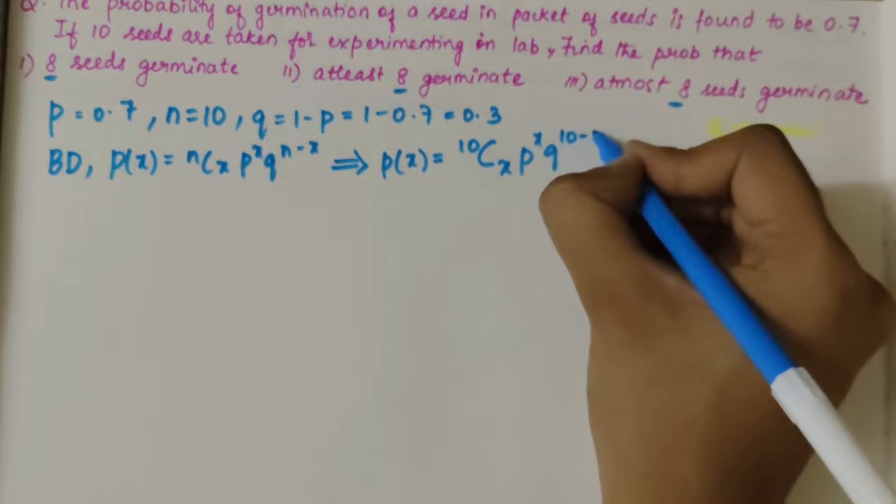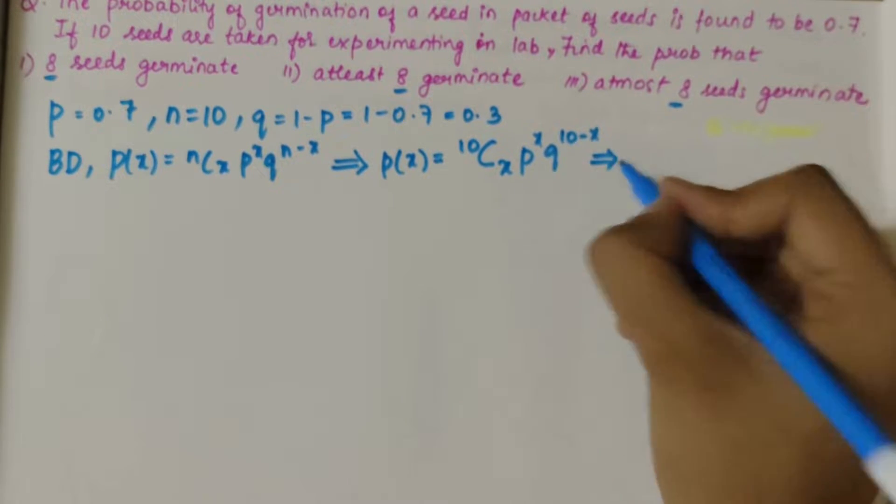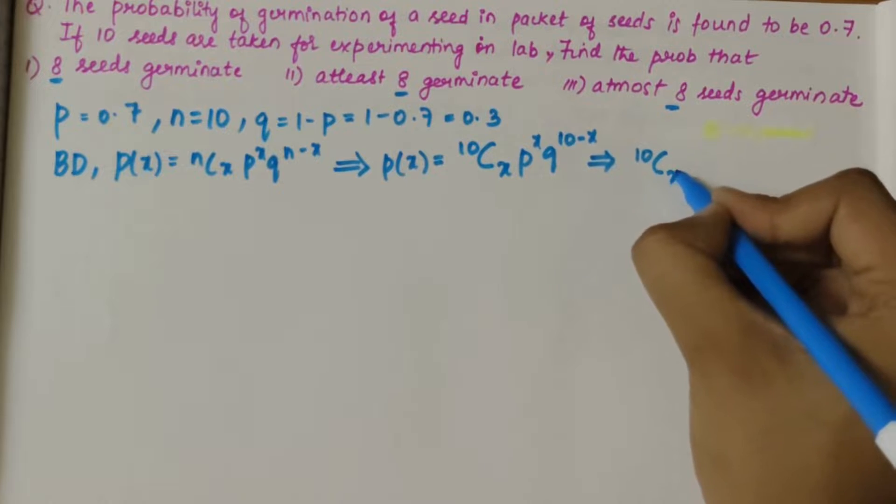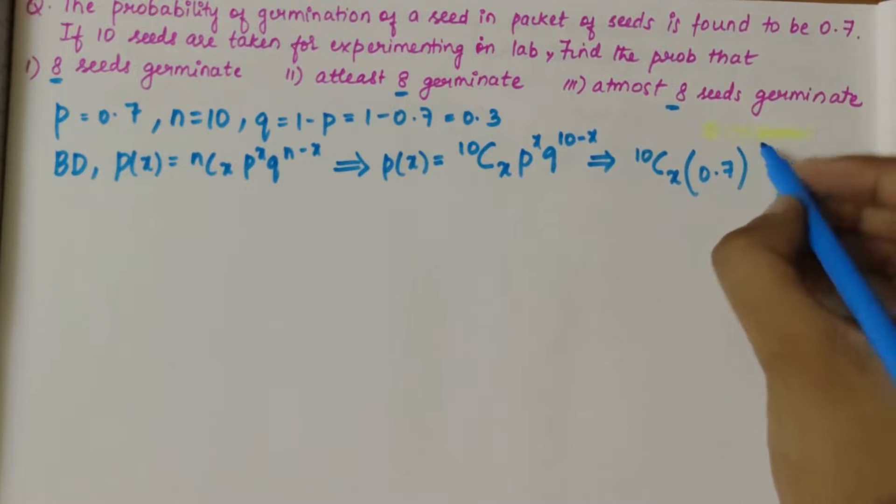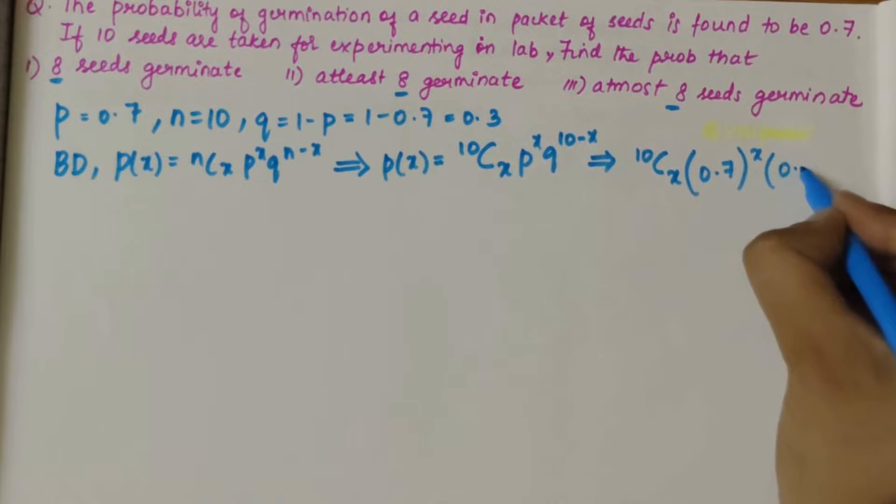Which can be further written as 10Cx, p value is 0.7^x, q value is 0.3^(10-x).